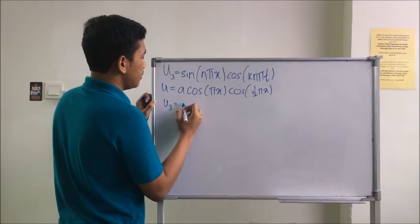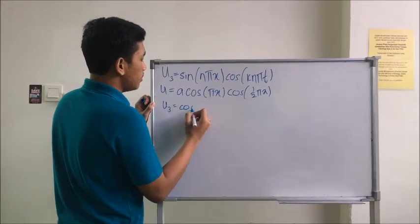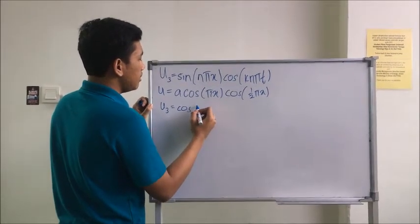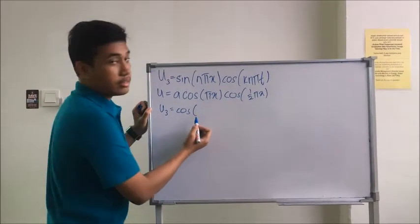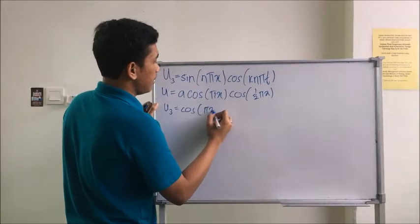First, we need to change the sine into cosine. So I change this. I use a trigonometry identity and just change it. For the n, we can just ignore because it's just a constant.